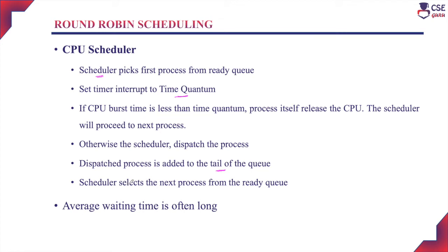Likewise, all processes will get an equal chance to execute with the CPU. Each process gets only the specified time slice to execute. Therefore, none of the processes will complete its execution quickly unless it has a very short CPU burst time. As a result, the average waiting time of the algorithm is often long.